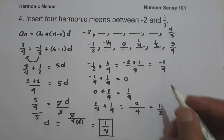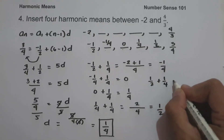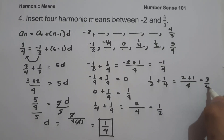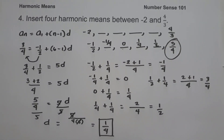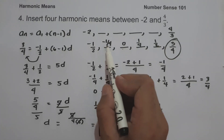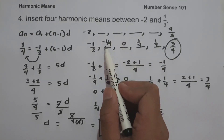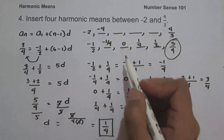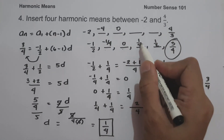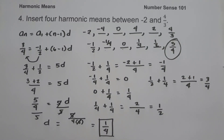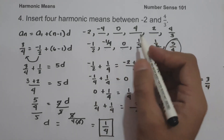To check: one half plus one fourth, using denominator 4, gives 2 plus 1, that is 3 over 4 — our last term. So the arithmetic means between negative one half and 3 over 4 are: negative one fourth, 0, one fourth, and one half. To find the 4 harmonic means between negative 2 and 4 over 3, we take their reciprocals: the reciprocal of negative one fourth is negative 4, the reciprocal of 0 is 0, the reciprocal of one fourth is 4, and the reciprocal of one half is 2. So the four harmonic means are negative 4, 0, 4, and 2.